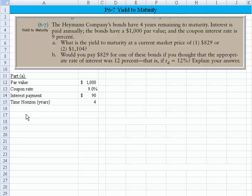I've worked this one ahead of time, so let's just bring some other factors to light. First off, we know the par value is $1,000. The coupon rate is 9%. The interest payments, then, are $90, and we can calculate that by taking the par value times the coupon rate. The time horizon, or the length of time we're looking at, is four years.